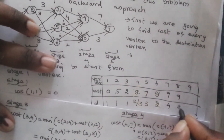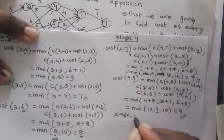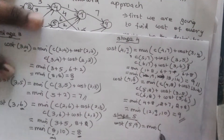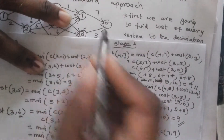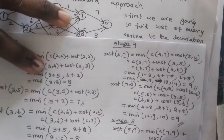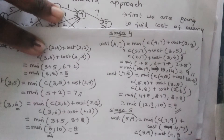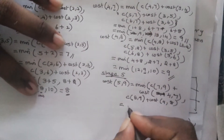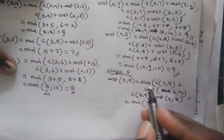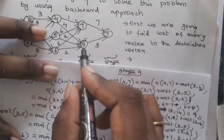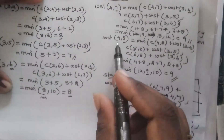Now we find cost(5,9), the stage 5 vertex. Cost(5,9) = minimum of C(7,9)+cost(4,7), C(8,9)+cost(4,8) = minimum of 7+9, 3+9 = minimum of 16, 12 = 12. The minimum value is obtained from vertex 8, so D = 8, and the cost is updated in the table.